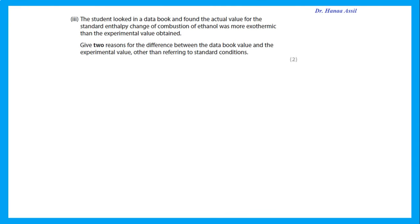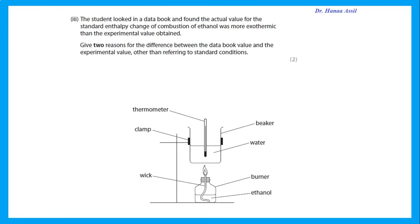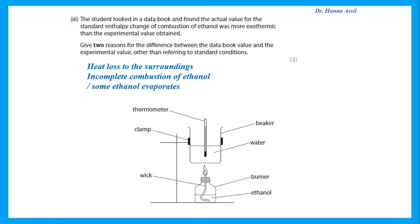The student found the data book value for standard enthalpy change of combustion was more exothermic than the experimental value. Two reasons for this difference: there was heat loss to the surroundings, and there was incomplete combustion of ethanol, so less energy is released. A third reason could be that some ethanol evaporated before weighing, so the actual mass burned is not correct.